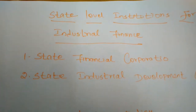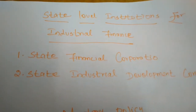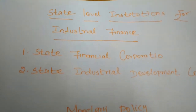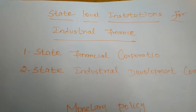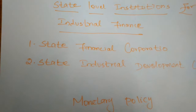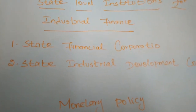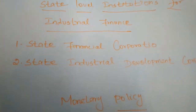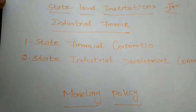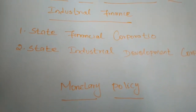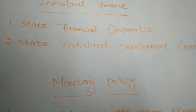Even though some state level institutions are also available in our nation for providing finance to industry. Today we will study about state level institutions for industrial finance. The government of India passed the State Financial Corporation Act in 1951, and state financial corporations were set up in many states. There are two types of state level institutions: state financial corporations and state industrial development corporations (SIDCs).